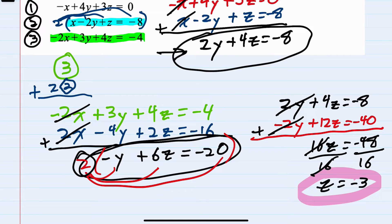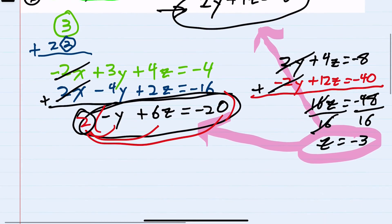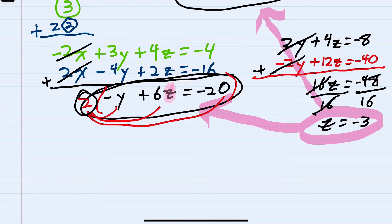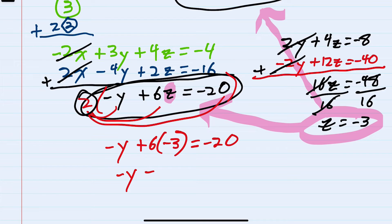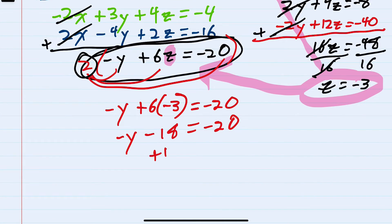We have our first variable solved, and I can start working my way back by plugging z in to solve for y. I'll choose the lower equation: negative y plus 6 times z, which we now know as negative 3, equals negative 20. So negative y minus 18 equals negative 20. Adding 18 to isolate the y: negative y equals negative 2, so y equals 2.